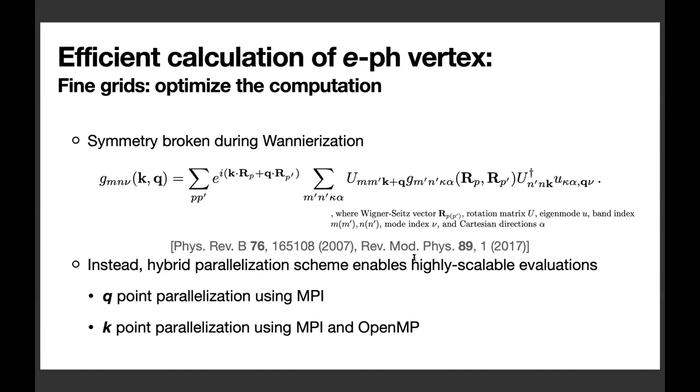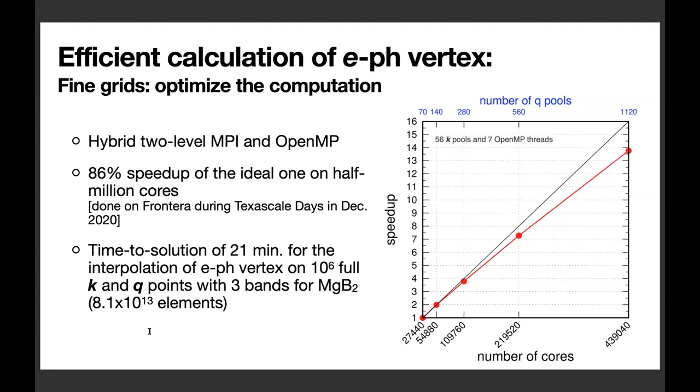Previously, EPW relies on one-level MPI parallelization over k-points. I implemented hybrid two-level MPI and OpenMP parallelization. In this scheme, evaluations over q-points are parallelized using MPI, and those over k-points using both MPI and OpenMP. This new parallelization scheme turned out to lead to good scaling behavior.